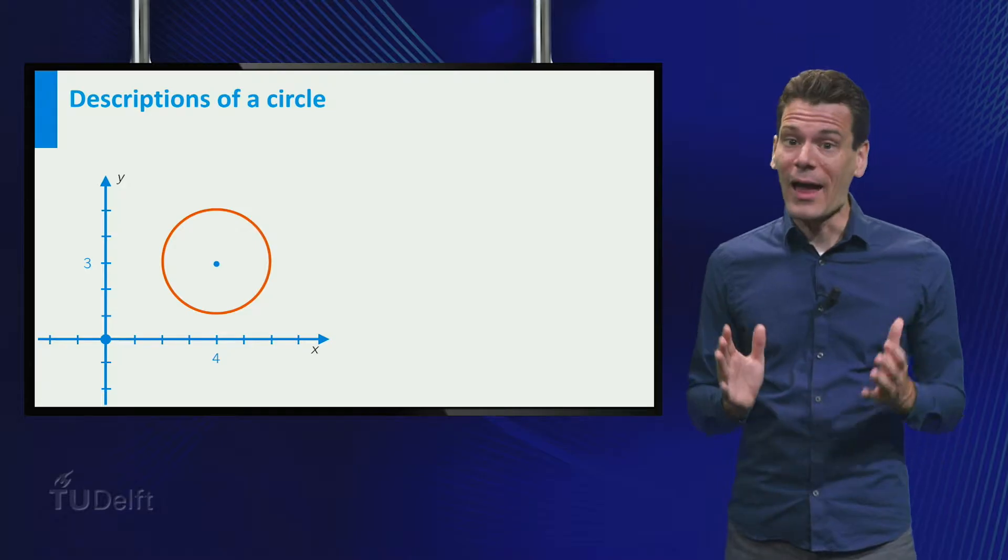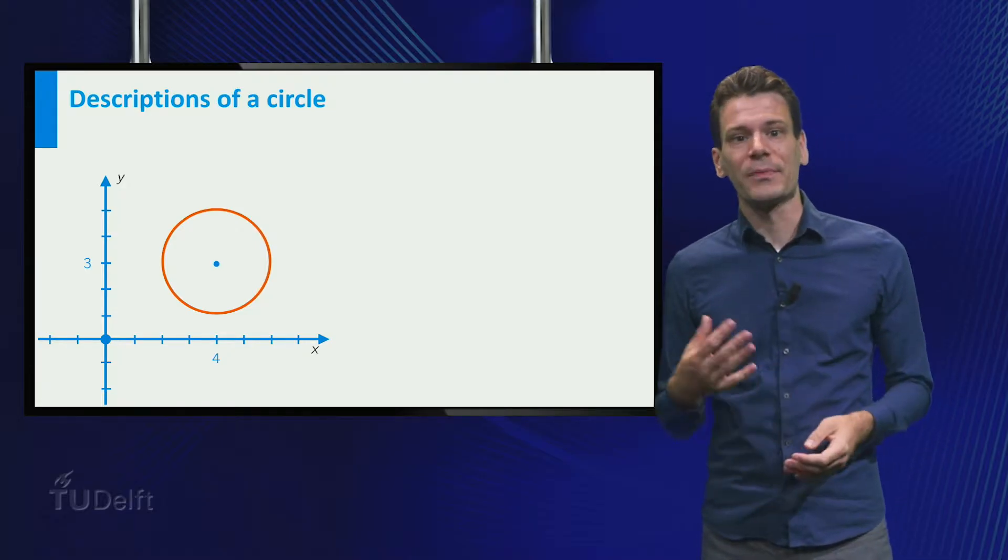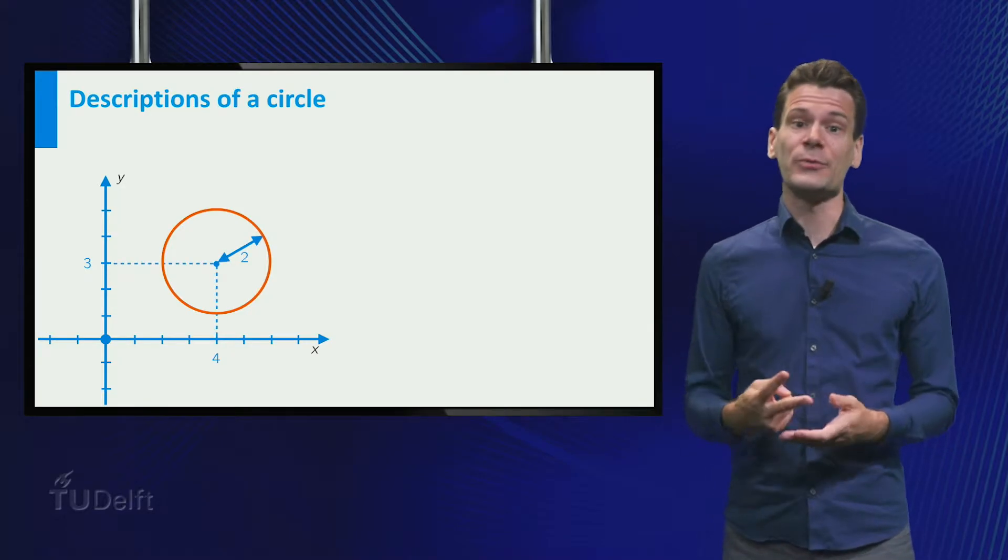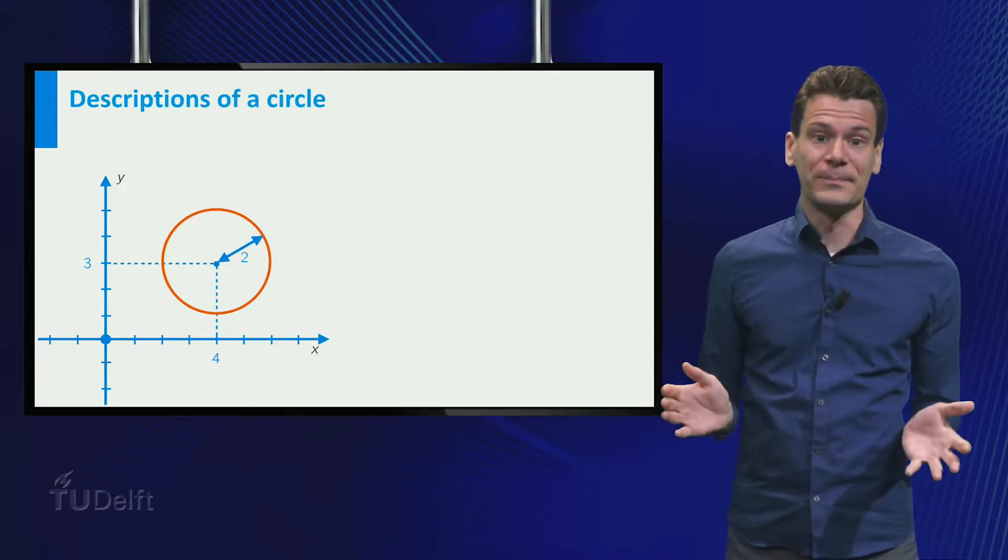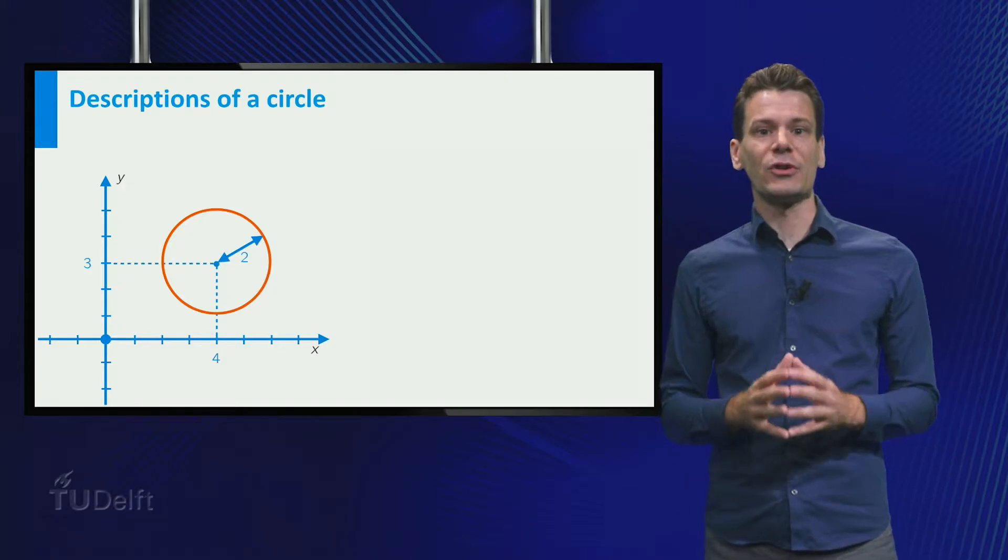To describe the circle, I ought to give a couple of characteristics. It is the circle with radius 2 and center (4,3). And this information completely describes the curve.